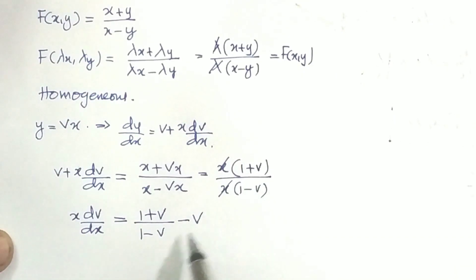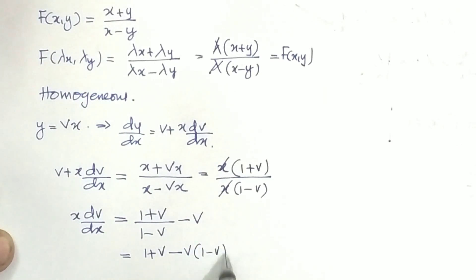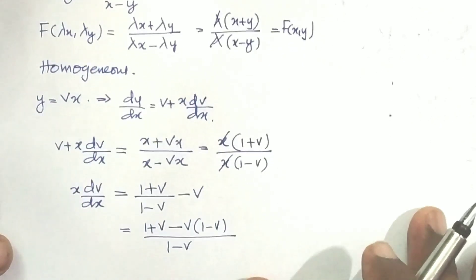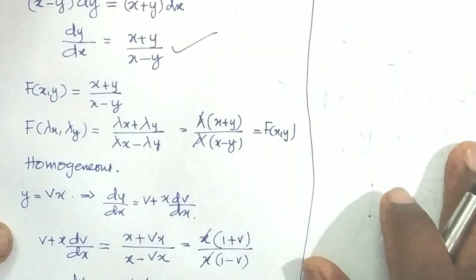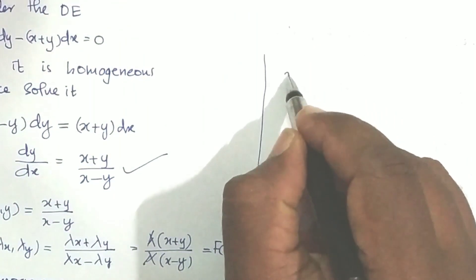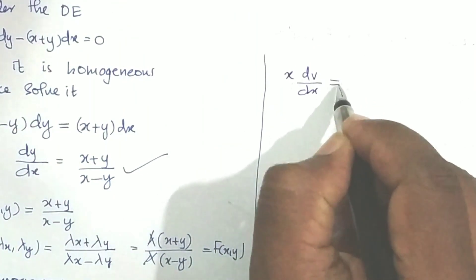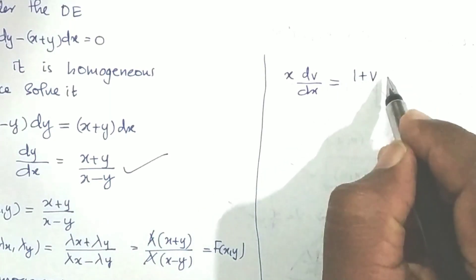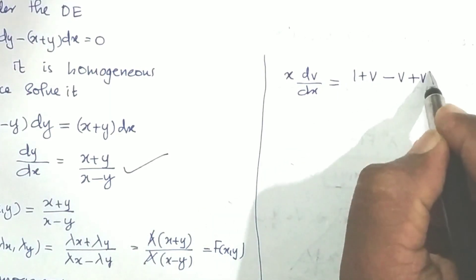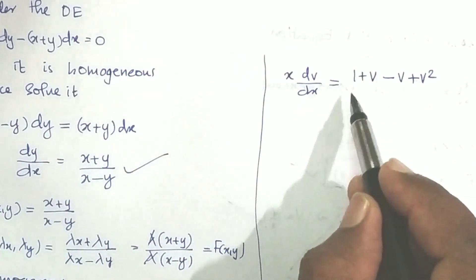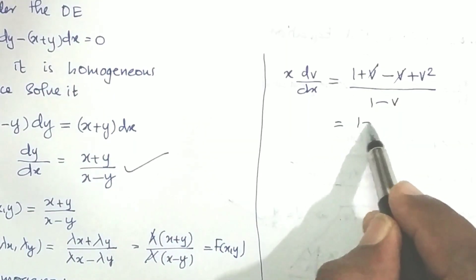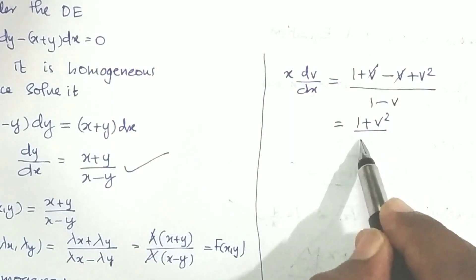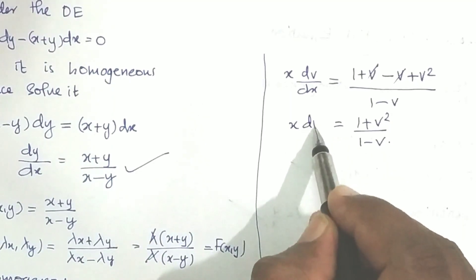So x dv/dx = (1 + v) / (1 − v) − v. Cross-multiplying: x dv/dx = [1 + v − v(1 − v)] / (1 − v) = [1 + v − v + v²] / (1 − v). Simplifying, x dv/dx = (1 + v²) / (1 − v).